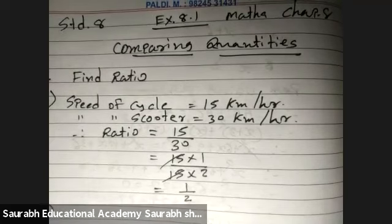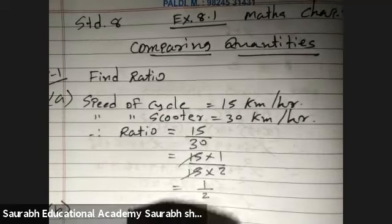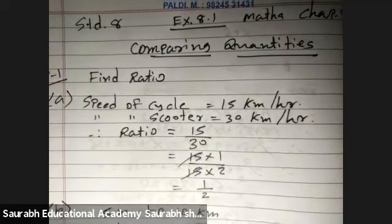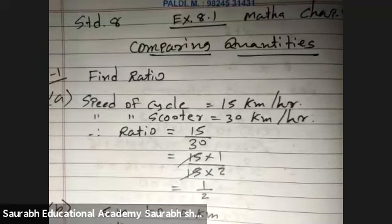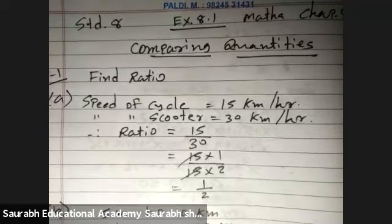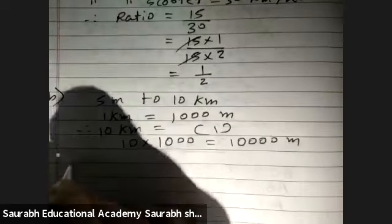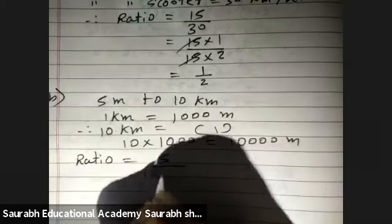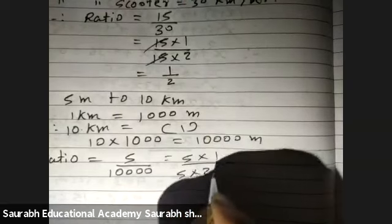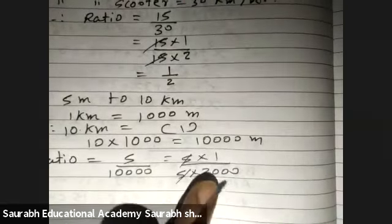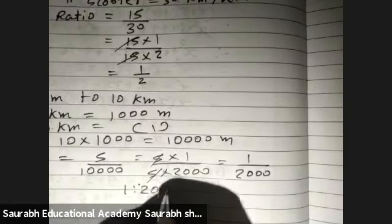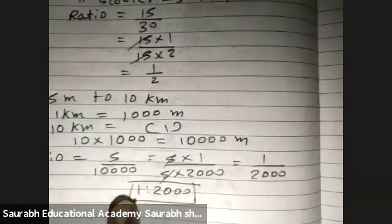Second question, b, 5 meter to 10 km. Now 1 km is equals to 1000 meter. Therefore, 10 km is equals to 10 into 1000, 10,000 meter. Therefore, ratio is equals to 5 meter upon 10,000 meter. 5 ones are 5, 2000 meter. 5 into 2000, that is 10,000. So, ratio will be 1 upon 2000 or we can write 1 is to 2000.